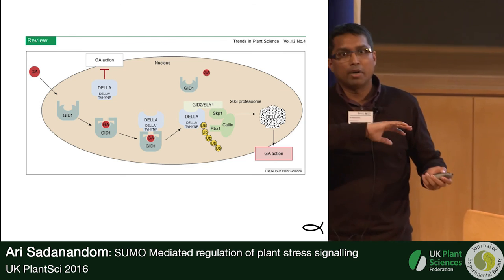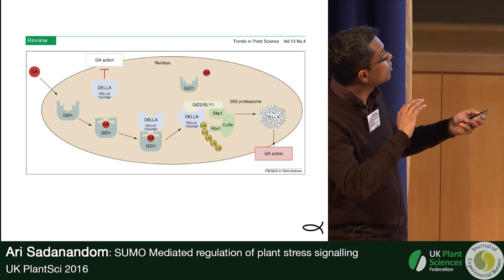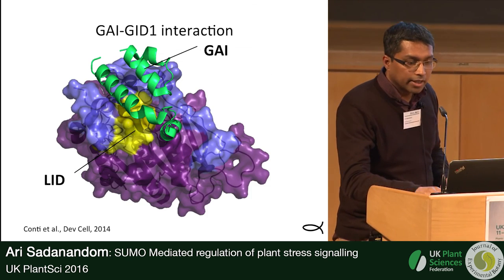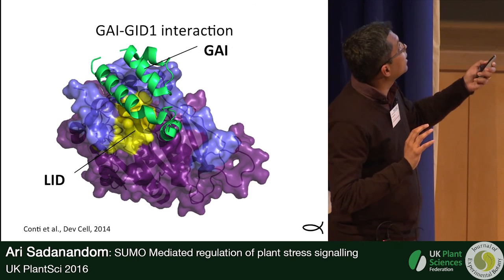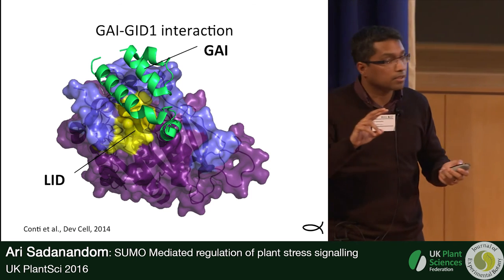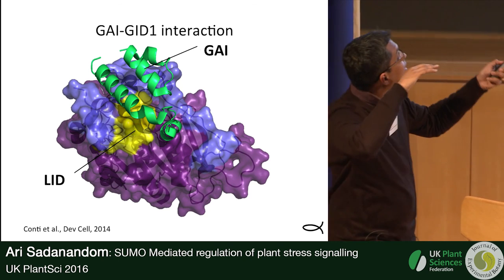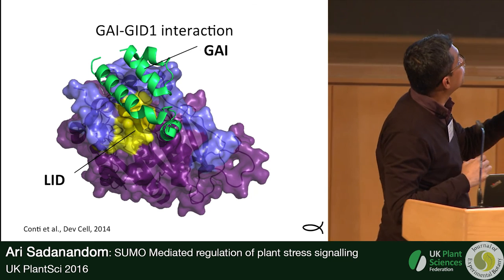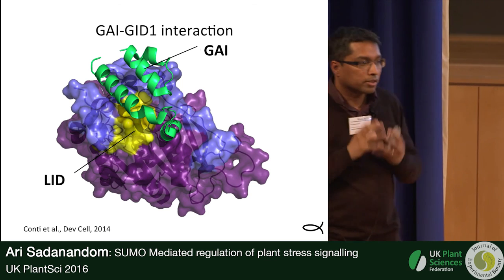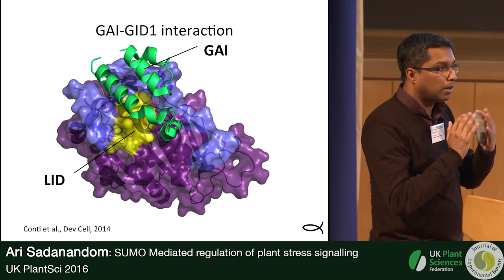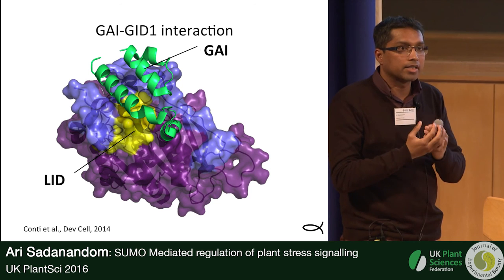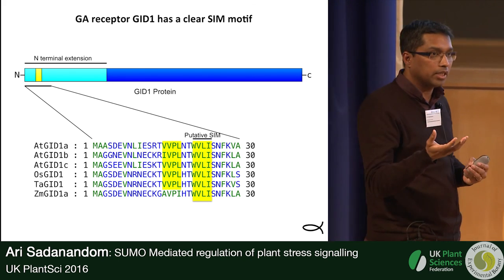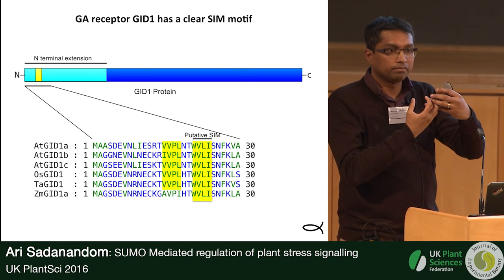We go back to the model: GA binds GID1, which acts as a co-chaperone to bring DELLA in and target it to E3-mediated ubiquitination and degradation. For this to work, GA must bind GID1. We modeled the structure of the GID1 GA receptor with the DELLA protein alpha-helices docking onto GID1, and the sumoylated lysine is right there poking directly into where GA would dock into the GID1 protein. This told us that something at the lid part of GID1 — where GA docks — must be responsible for stabilizing sumoylated DELLA.